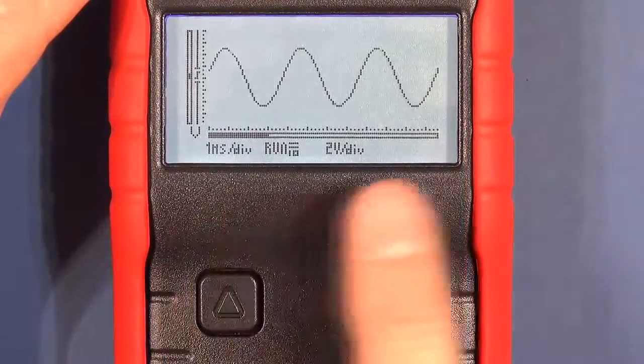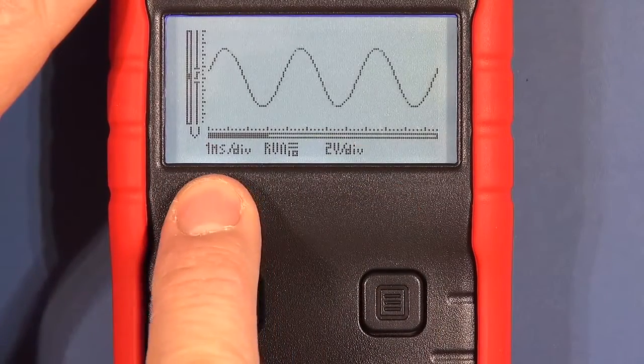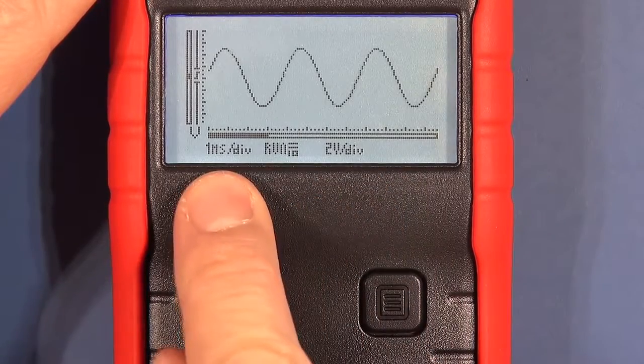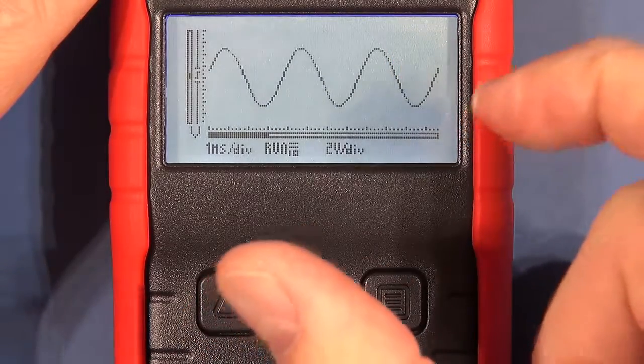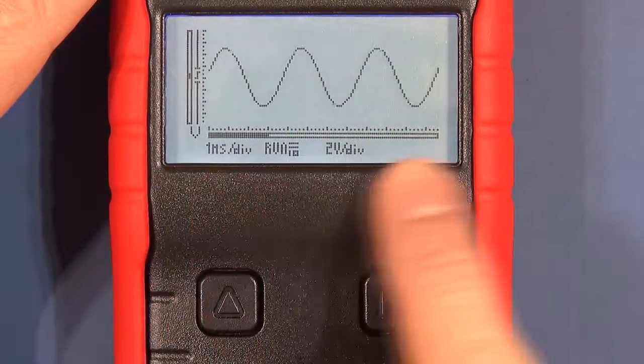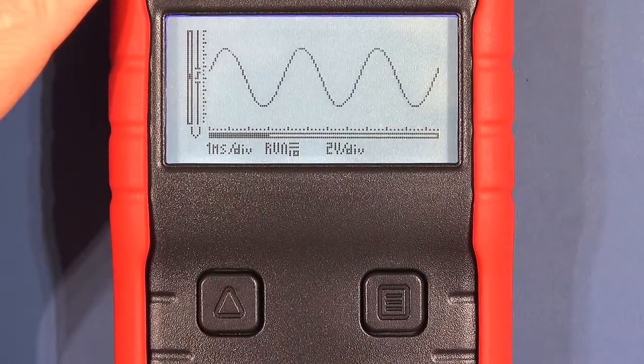The other notable issue that I have found with this scope, you can obviously have your time base in seconds per division and then obviously your volts per division but you cannot set frequency. You can take measurements which I'll demonstrate now and from that from the period you can work out frequency, but nowhere are you able to display the frequency of the wave on the actual scope screen itself.